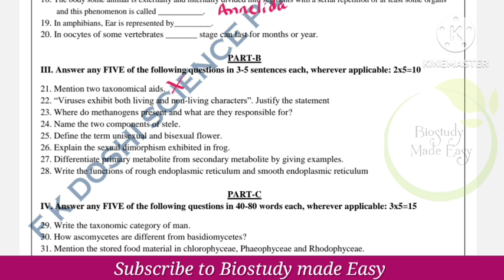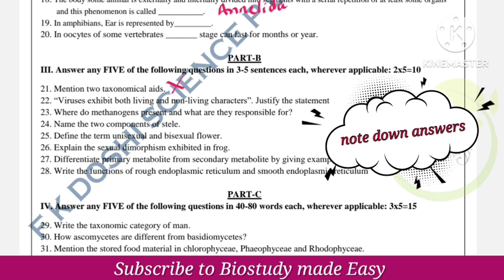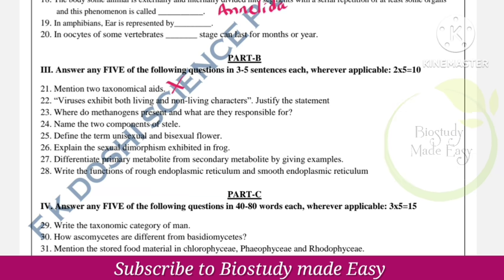Viruses exhibit both living and non-living characters — justify the statement. Next: where are methanogens present and what are they responsible for? Methanogens are present in the gut of ruminants and are responsible for producing methane gas and biogas. Name the two components of stele — this is from the anatomy of flowering plants chapter.